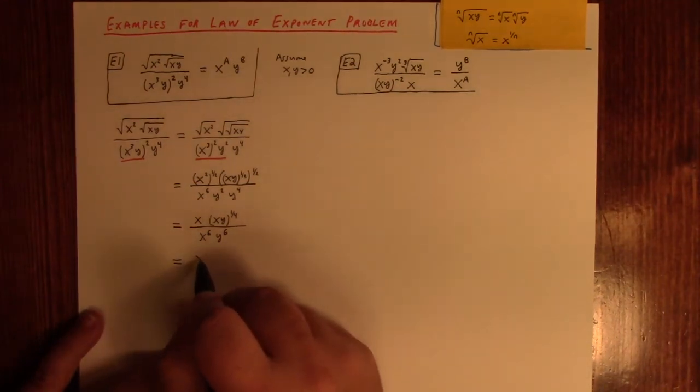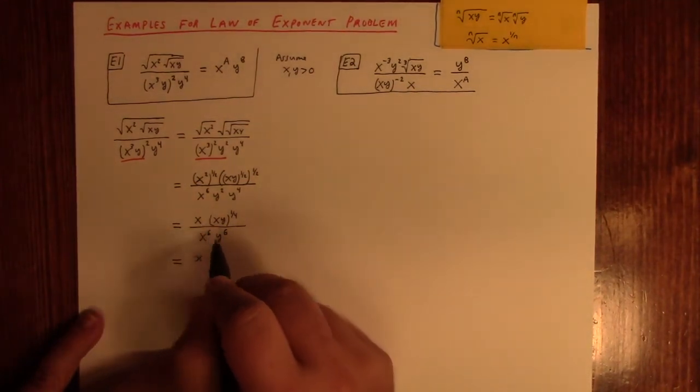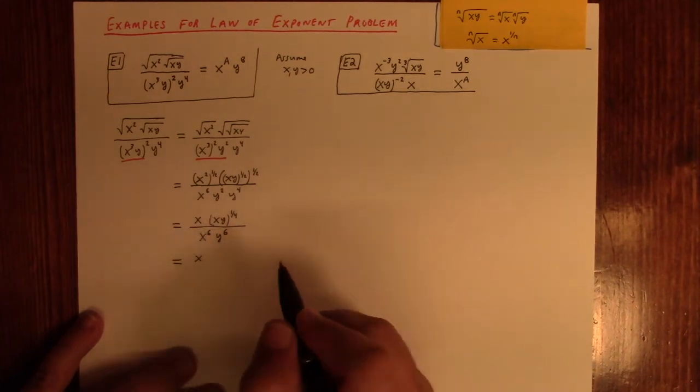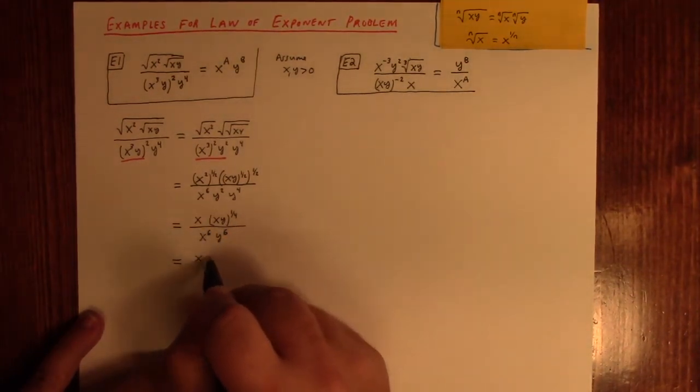Now, that gives me x. I mean, I could have simplified this x and that x to the sixth to give me an x to the fifth downstairs, but I didn't. I'll just do this. Okay.